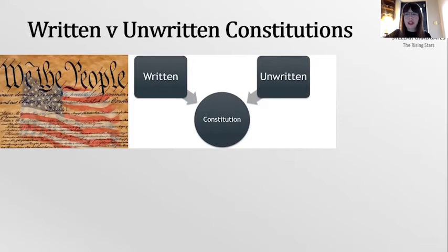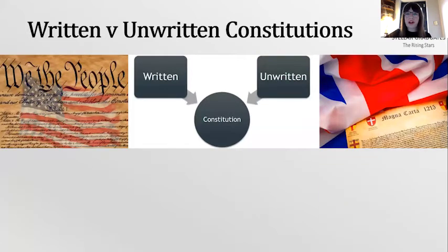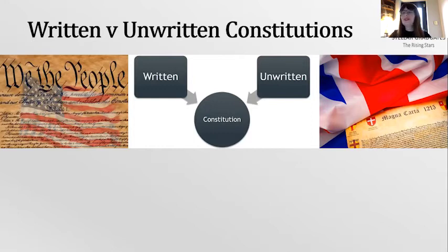The UK has what some describe as an unwritten constitution, but technically this isn't true. The UK constitution is written — it's just uncodified. Uncodified means the different documents that make up the UK constitution have not been compiled into one document like in the US. Various documents spread across different places make up the UK constitution, including laws that parliament passes — some statutes are really important, particularly in relation to the different regions: Scotland, Wales, and Northern Ireland.